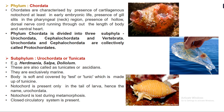The first sub-phylum is Urochordata, also called Tunicata. Examples are Herdmania, Salpa, and Doliolum. Organisms in this sub-phylum are called tunicates or ascidians, and are exclusively marine. The body is soft and covered with a tunic made up of tunicin. The notochord is present only in the tail region of the larva, hence the name Urochordata.